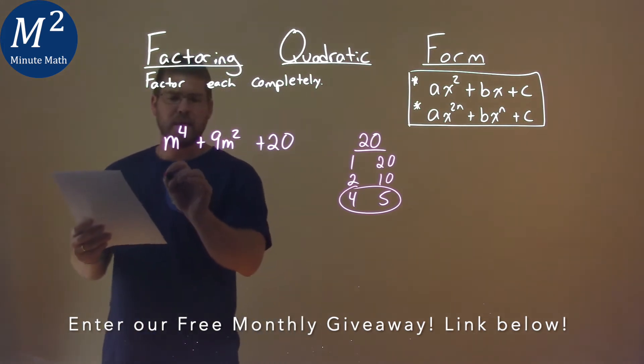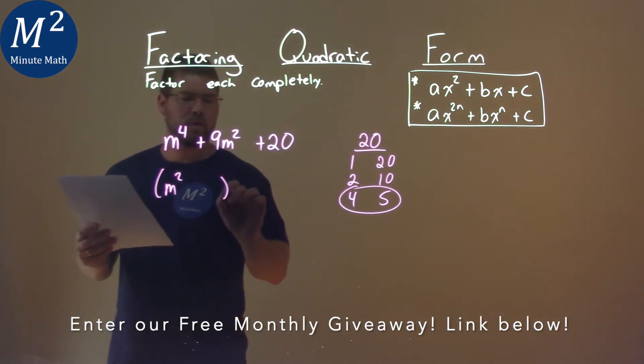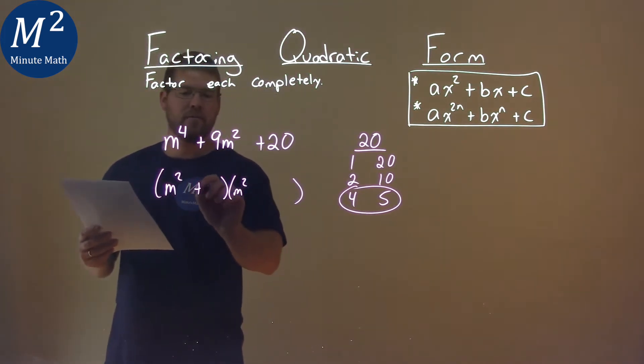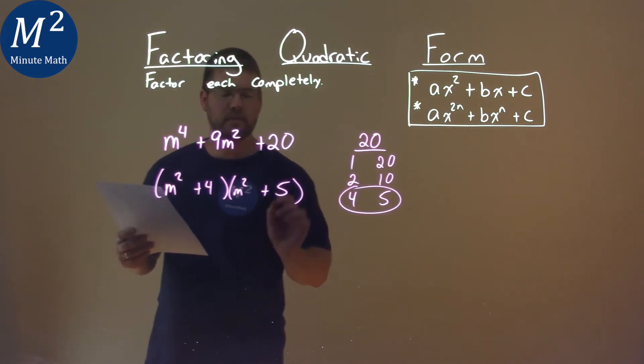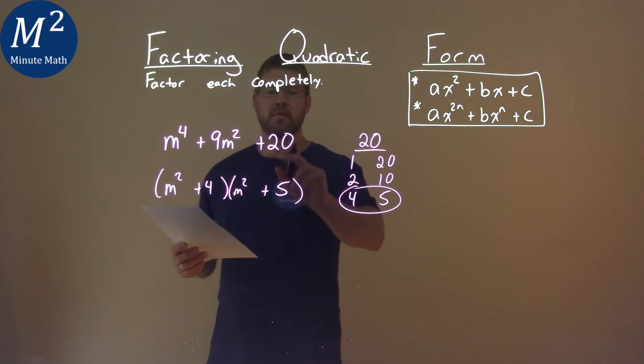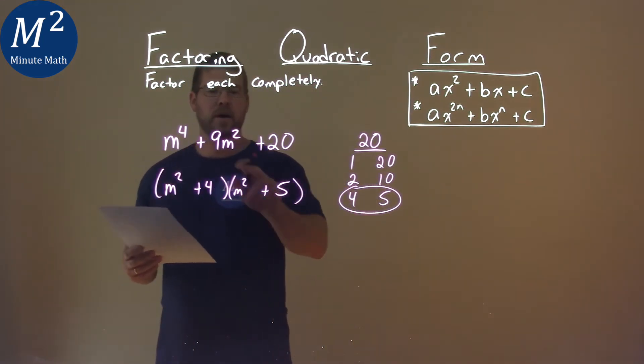So, we take this m squared form times m squared, and we want to plug in the 4 and 5 here. We add a 4, and add a 5. m squared times m squared is m to the 4th, and 4 times 5 is 20. But when we add the 4 and the 5, we get the 9.